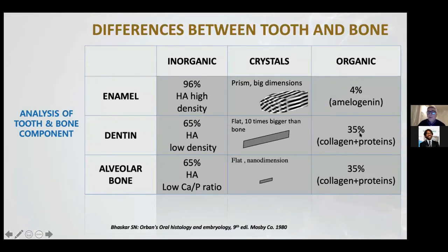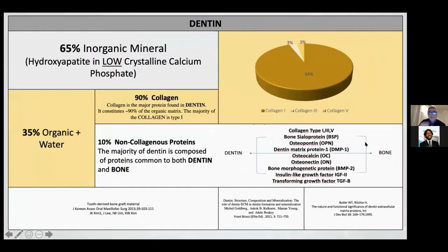The organic part is the same: we have 35% collagen and proteins. Of this 35%, 90% is collagen and 10% is non-collagenous protein. This non-collagenous protein is very similar between dentine and bone.